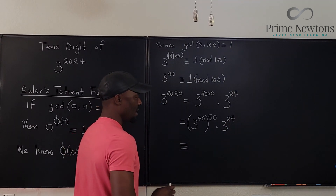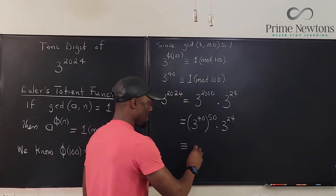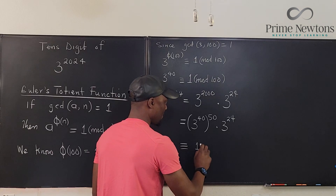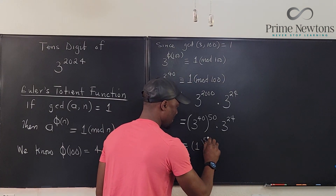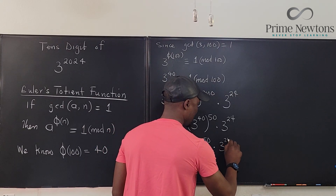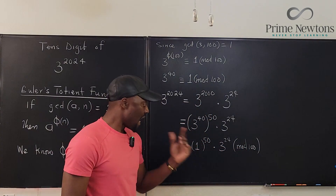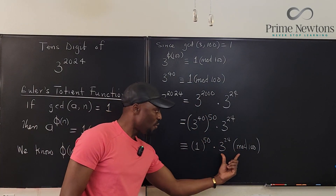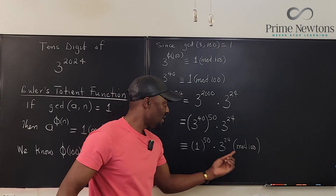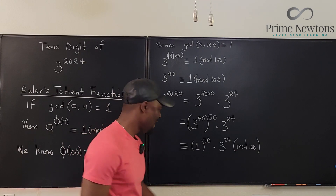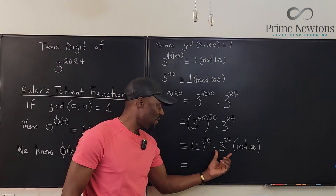This expression is congruent mod 100 to 1 to the 50 times 3 to the 24 mod 100. Since 1 to the 50 is just 1, we're left with 3 to the 24 mod 100. If we can compute 3 raised to the 24, we get our answer — the last two digits. But this number is still too large to work with directly.